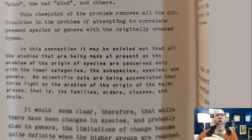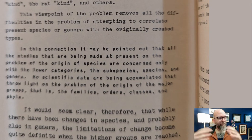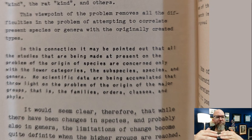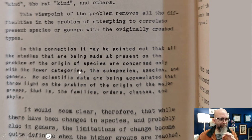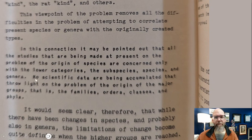Clark writes: 'This viewpoint of the problem removes all the difficulties of the problem of attempting to correlate present species or genera within the original created types.' Problem solved — or so it seems. Clark also writes: 'In this connection, it may be pointed out that all the studies that are being made at present on the problem of the origin of species are connected only with the lower categories.' People study how species form and are concerned only with the lower categories — the subspecies, species, and maybe genera. 'No scientific data are being accumulated that throw light on the problem of the origin of the major groups — that is, the families, orders, classes, and phyla.'